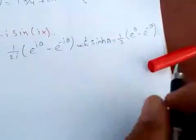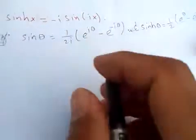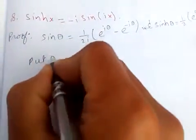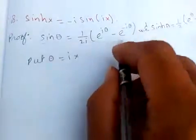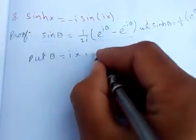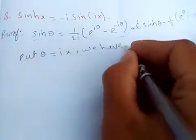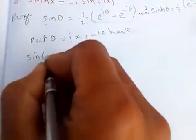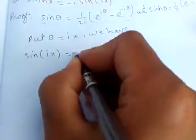Now if we put θ = ix into the sine formula, we have sin(ix) = (1/2i)(e^(i·ix) - e^(-i·ix)).